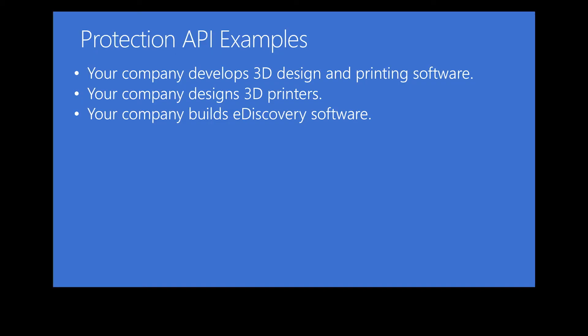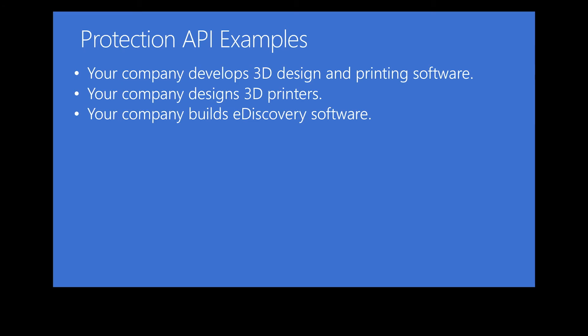For the protection API — going back to 3D printing, if you own a proprietary file format, you could leverage the protection API to protect certain parts of that file and restrict a user from printing it. If it's a prototype, you'd want to make sure it doesn't get leaked to a competitor and printed on their 3D printer. Another big use case is eDiscovery software — today that data is opaque to most third-party eDiscovery vendors and they can't reason over it. Lawyers love it when you say you don't know what's in that file. We see the protection API being used by eDiscovery vendors to decrypt that information and provide it in an output PST or file as part of litigation.